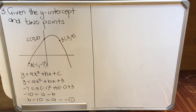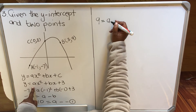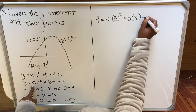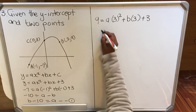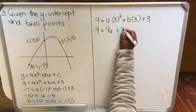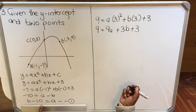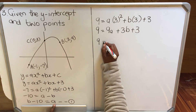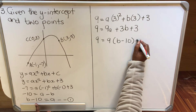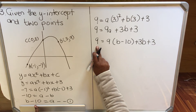Then you substitute the other coordinate. For x = 3, y = 9: 9 = a(3)² + b(3) + 3, which gives 9 = 9a + 3b + 3. Taking 3 to the other side: 6 = 9a + 3b. Now substitute equation one, a = b - 10: 9 = 9(b - 10) + 3b + 3.